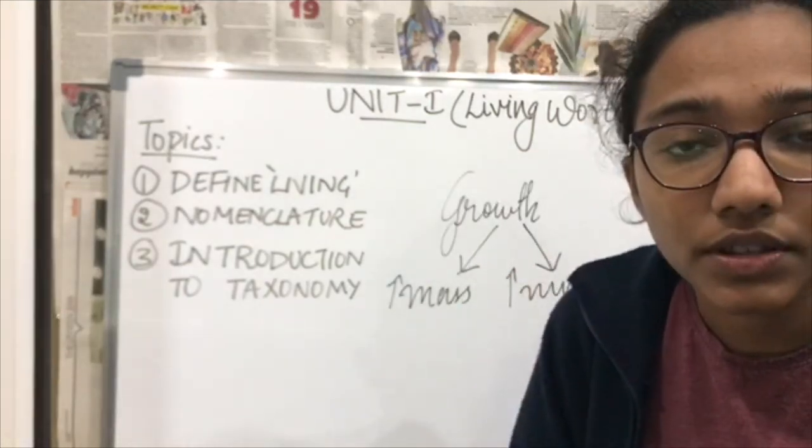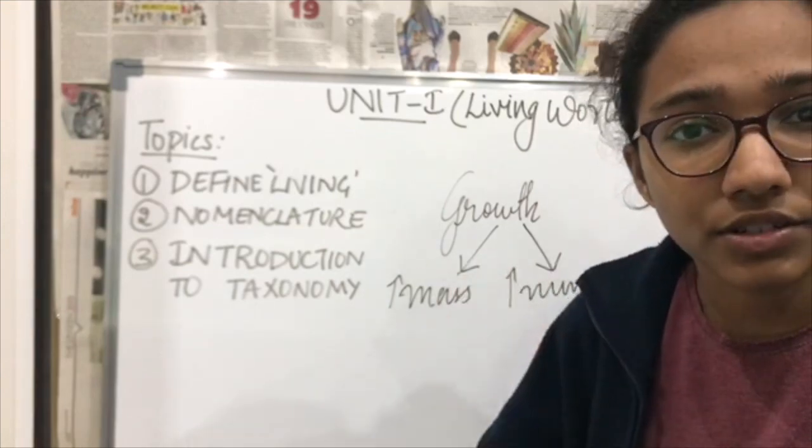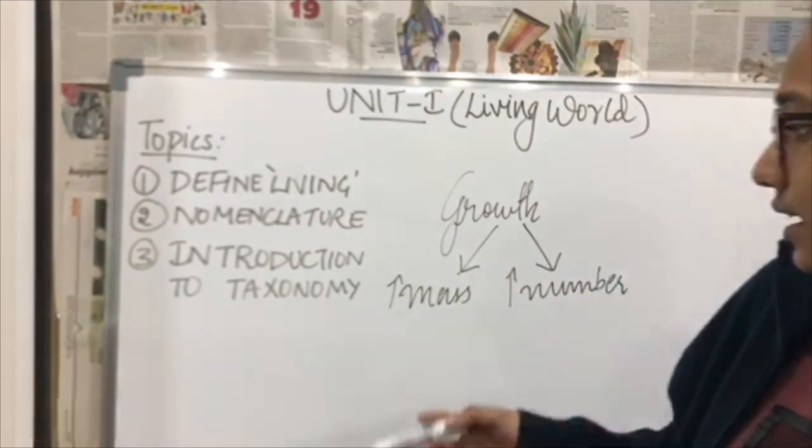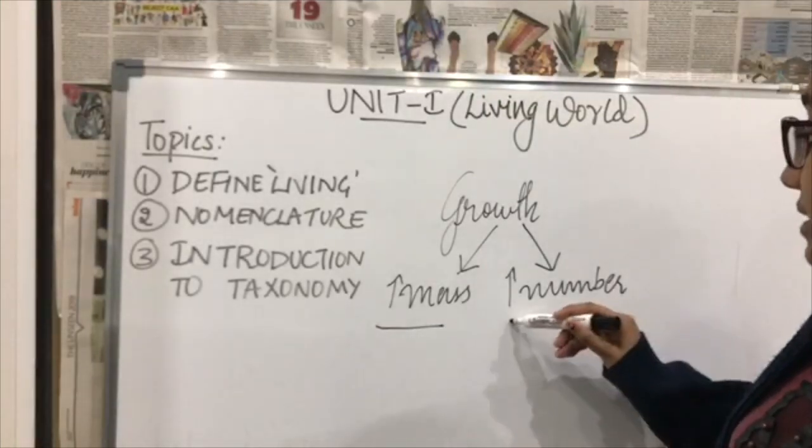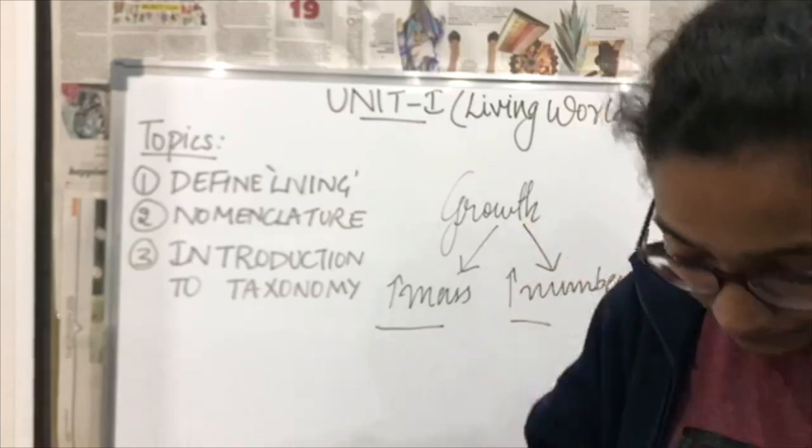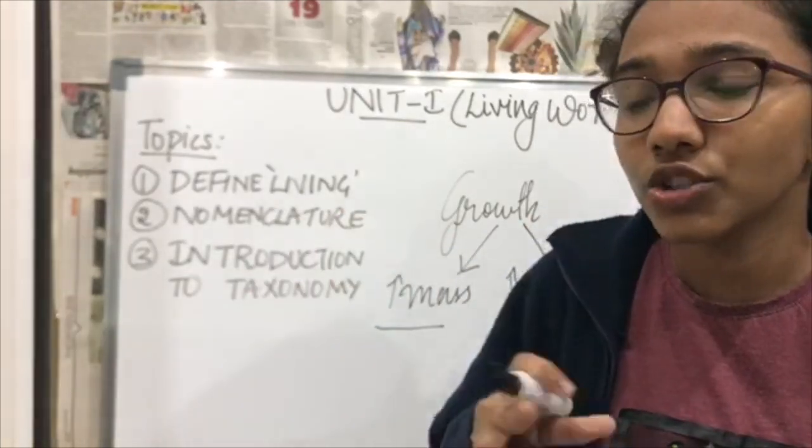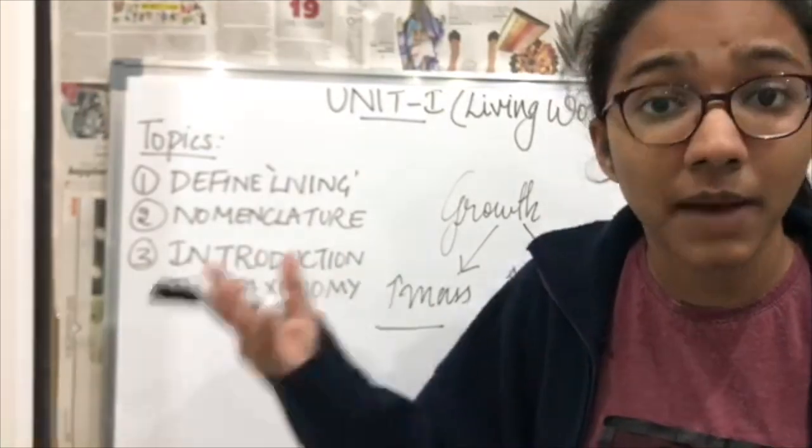One thing very important in growth which people usually ask is what are the two twin characteristics of growth? We can say that increase in mass and increase in number of individuals are the two twin characteristics of growth. When I talk about unicellular organisms, let's consider amoeba, which divides into two organisms by binary fission.